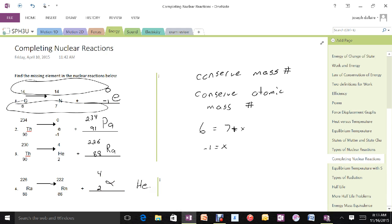So that's it. So you make sure the numbers across the top are the same, the numbers across the bottom add up to the same, and then you can find your missing element. That's how you complete nuclear reactions.